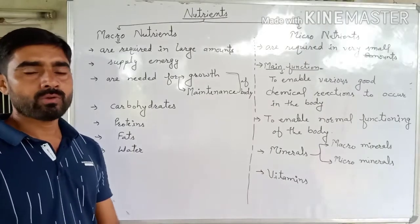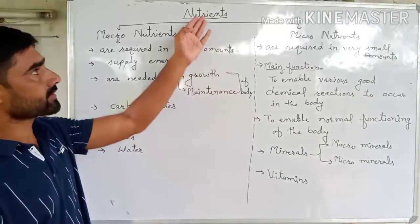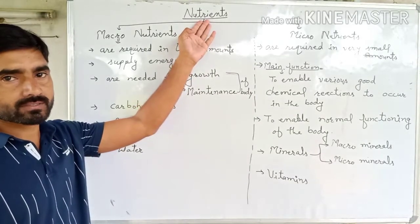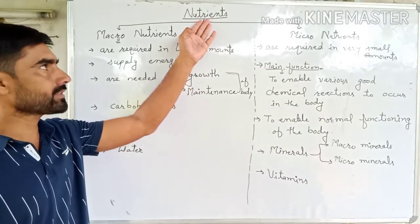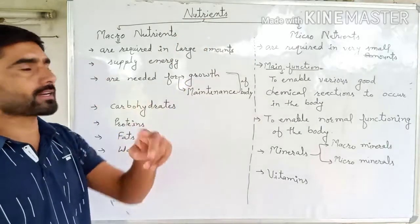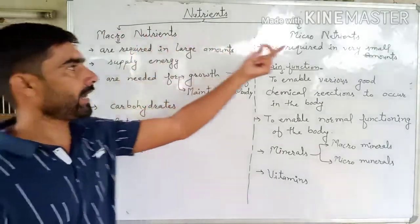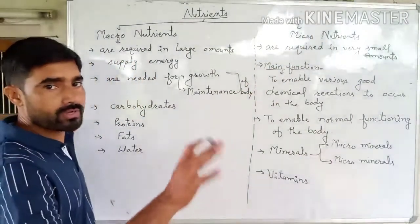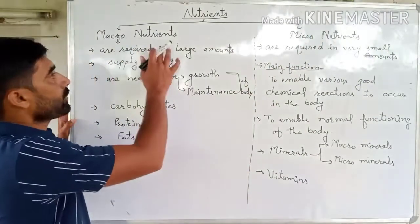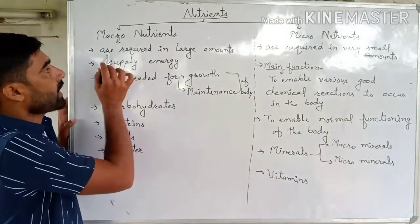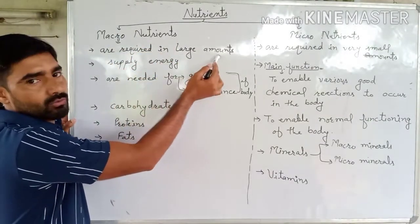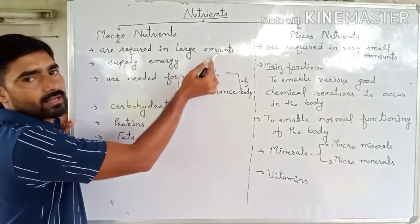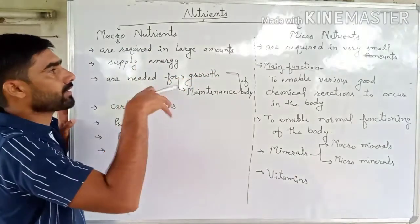Now we will discuss about nutrients. Nutrients are divided into two parts: macronutrients and micronutrients. First of all, we will discuss about macronutrients. Macronutrients are required in large amounts.